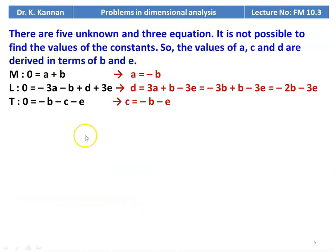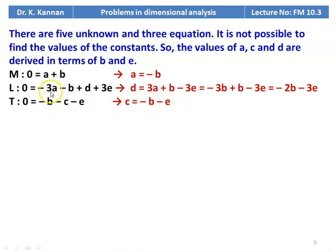We express a, c, d in terms of b and e. From the M equation: a + b = 0, so a = −b. From the T equation: c = −b − e. From the L equation: d = 3a + b − 3e = −3b + b − 3e = −2b − 3e.